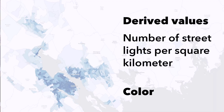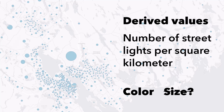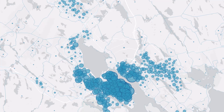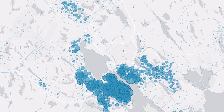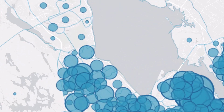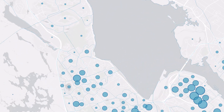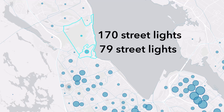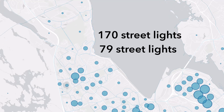But why should you not map derived values with size? Let's try it out and examine the results. This map shows streetlights per square kilometer with graduated symbols. Right here, I would assume that there are more streetlights in this area than in this one. But actually, the opposite is true. If you map derived values with size, once again, you're probably going to end up with a misleading map.